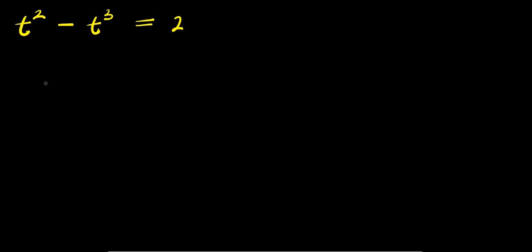Hello. How to solve this exponential problem: this is t to the power of 2 minus t to the power of 3, and this equals 2. We are solving for all values of t that satisfy this equation. Now look — here we have power 2, here we have power 3, different powers, and here we have 2.